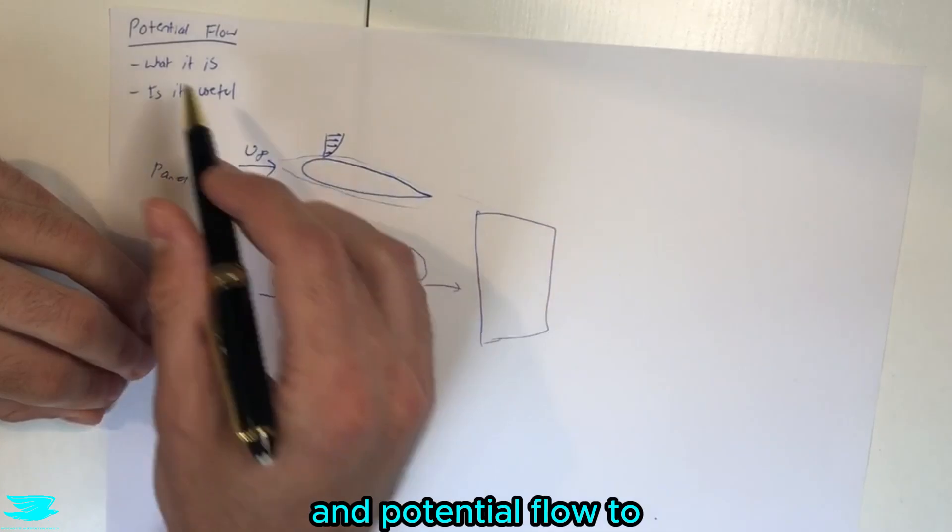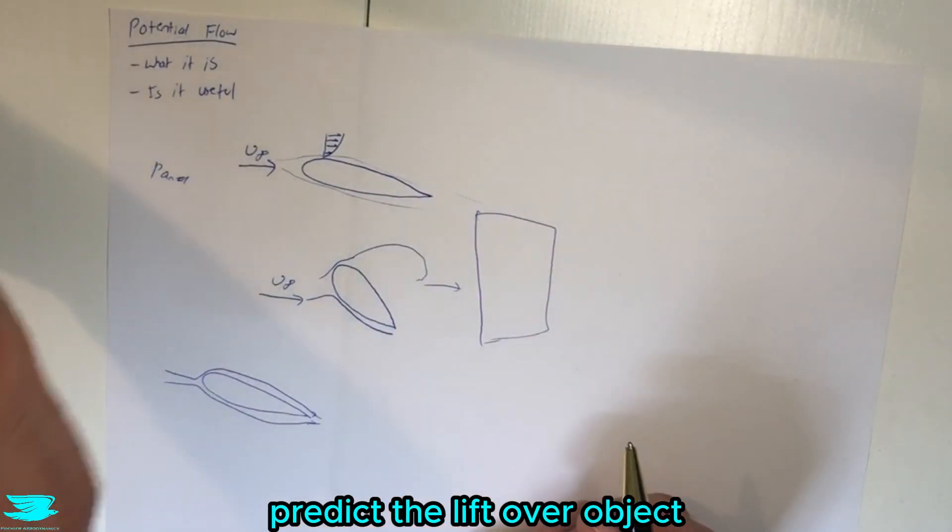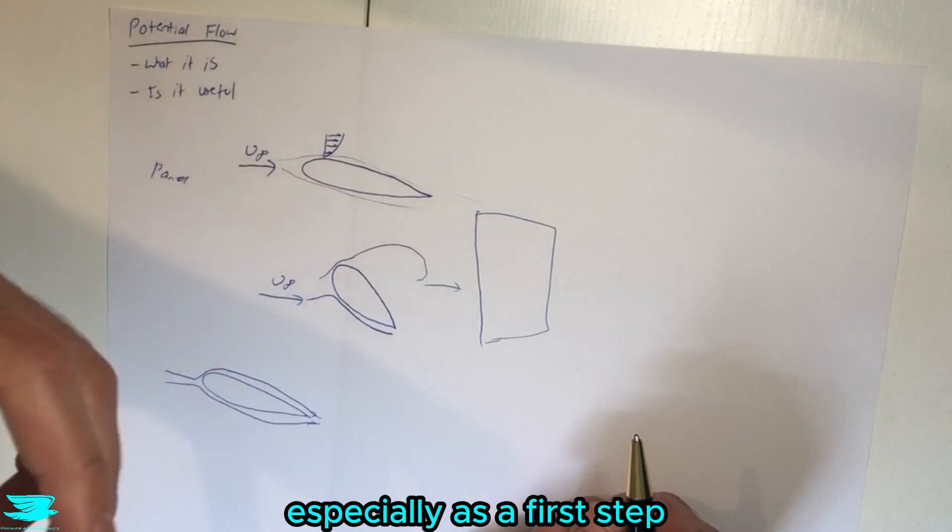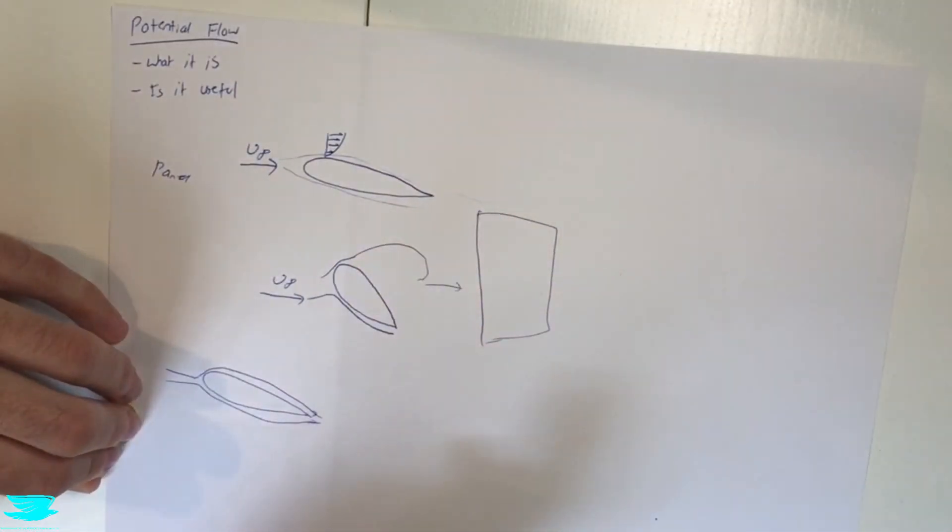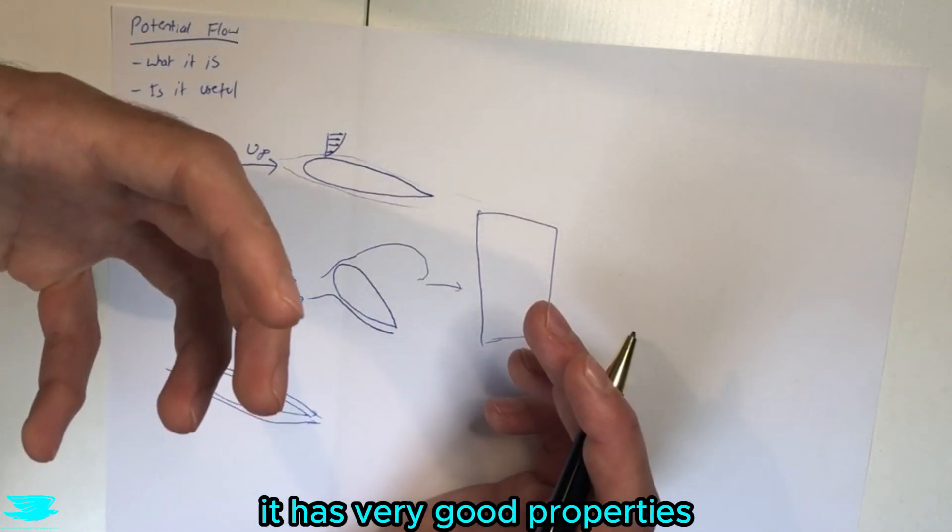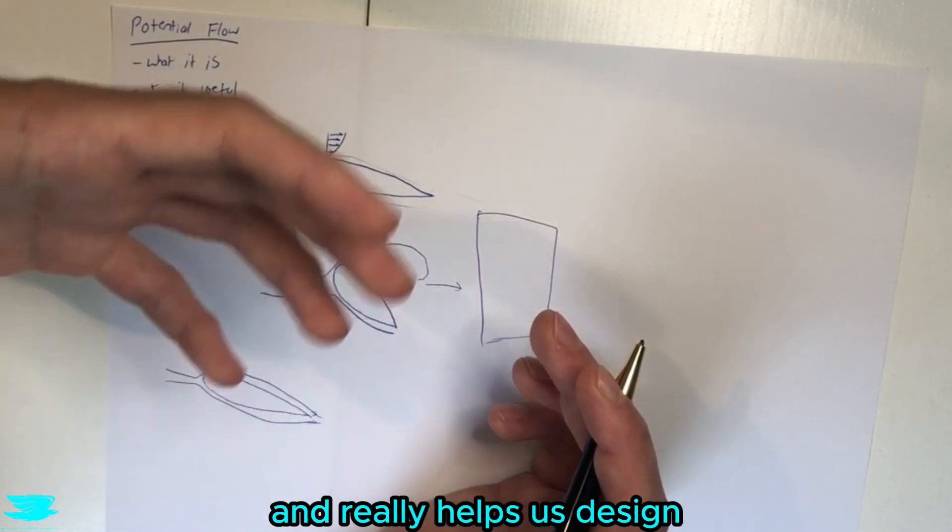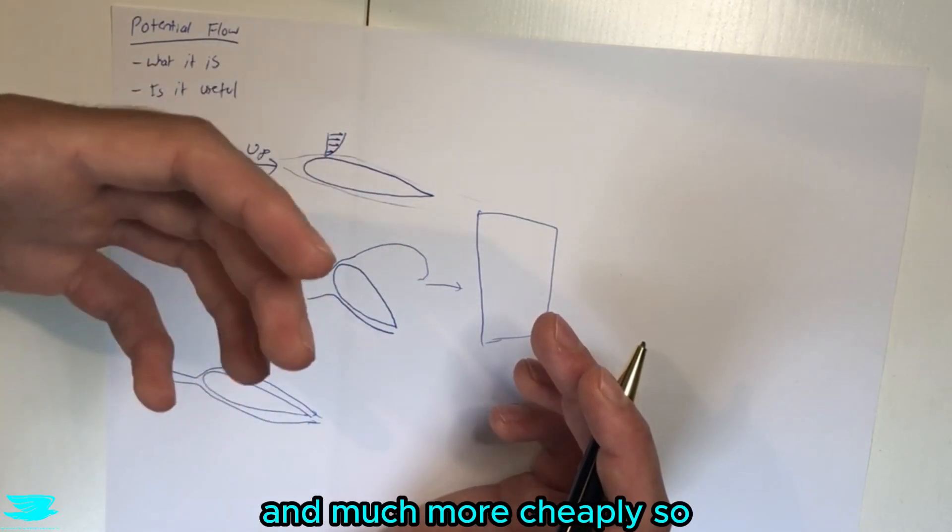Generally speaking, using panel methods and potential flow to predict the lift over an object is very common to do, especially as a first step, and that is also another use for potential flow. So potential flow is not useless - it has very good properties to use as initial steps and really helps us design things much quicker and much more cheaply.